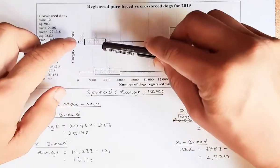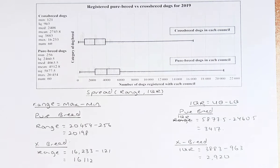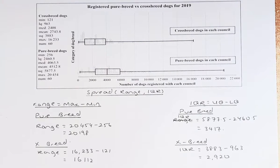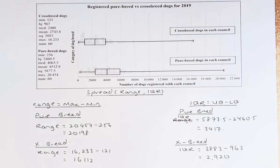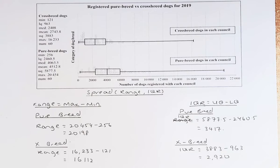This is seen in the box — the purebred dog has a slightly bigger interquartile range box than the crossbreed. Because the purebred has a bigger range and bigger interquartile range, we can conclude that the purebred dog has a bigger spread than the crossbreed dog.